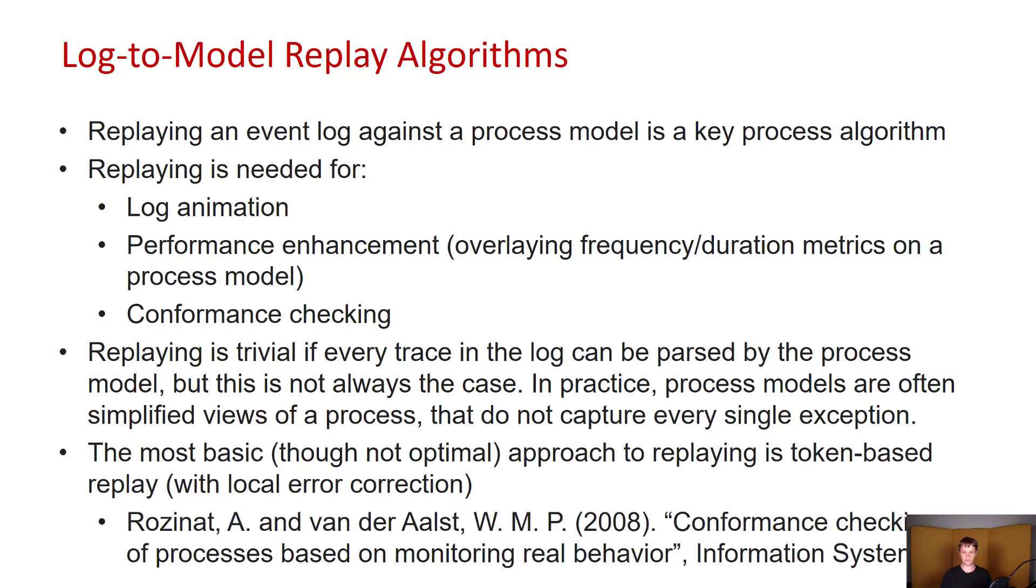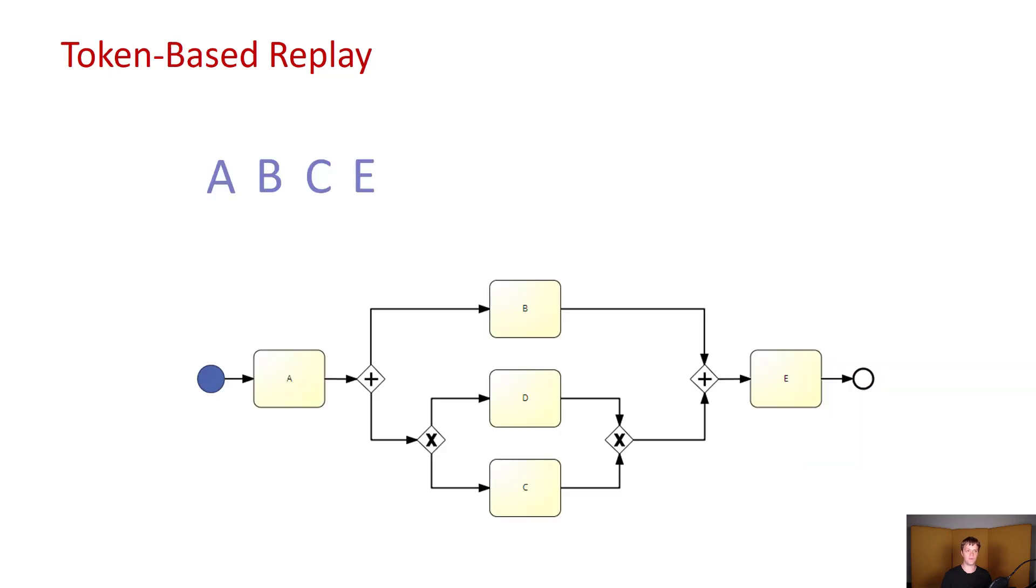The most basic, though not optimal, approach to replaying is token-based replay with local error correction. This is the first one that we are going to look at in this part of the lecture. The idea of token-based replay is actually very straightforward and simple. We will use a token per case to represent where we are in the current ongoing case with respect to the given process model. We have a quite simple example right here on the slide.